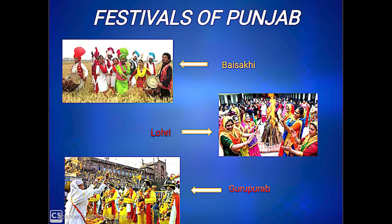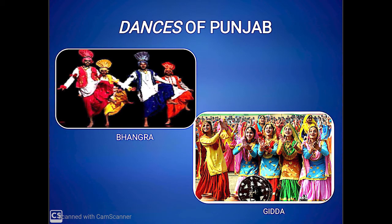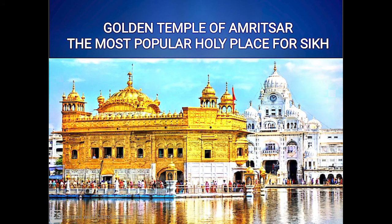The main festivals of Punjab are Lohri, Baisakhi, and Gurupurab. While talking about Punjab, we cannot miss the vibrancy and liveliness of its dances. Bhangra is performed by boys in their colorful lungis and kurtas, and Gidda is performed by girls in beautiful attires on the beat of Dhol. Another famous and important place is the Punjabis' Golden Temple in Amritsar, which is a holy place for Sikhs.